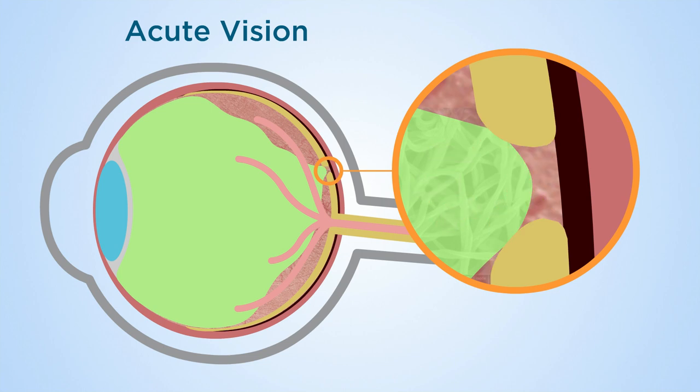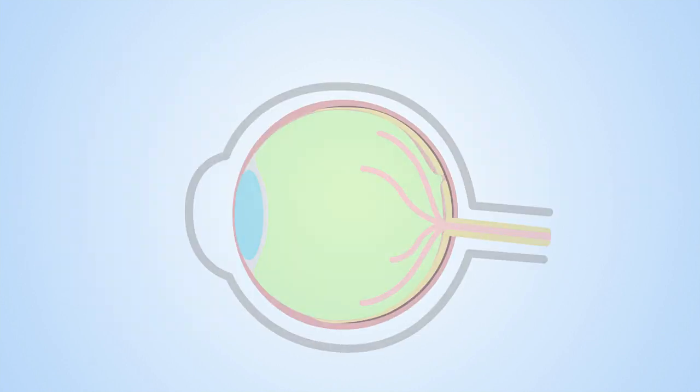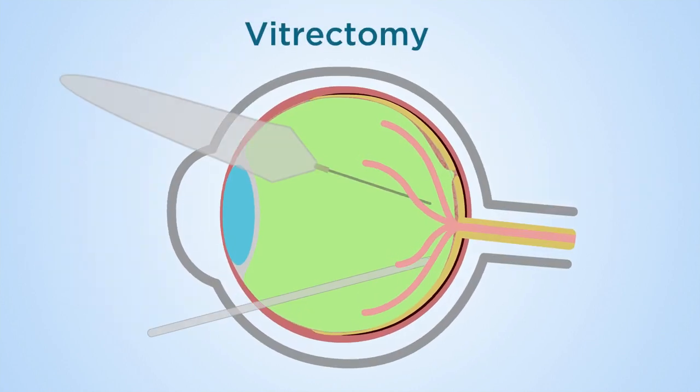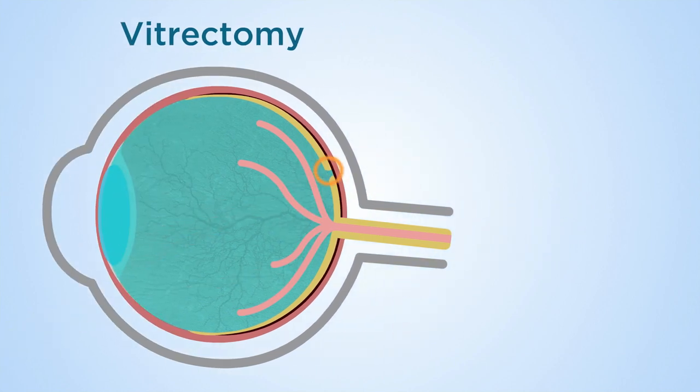Large, full-thickness macular holes have a diameter greater than 500 micrometers. The current treatment includes vitrectomy, removal of the vitreous and epiretinal membrane to release all traction on the retinal surface.